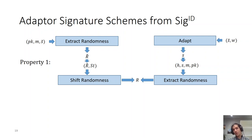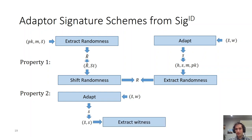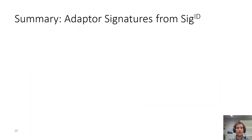This is, for example, necessary in order to prove pre-signature adaptability, where you have a valid pre-signature and you want to make sure that if you adapt it, you would get a valid full signature. The second property is simpler: it states that if you adapt a pre-signature and then extract the witness from the resulting signature and pre-signature pair, you would get the same witness that was used originally to adapt. This is of course needed for proving extractability. At this point, I will not go into more details regarding our single-party transformation of SIGID to adapter signatures, and I would now summarize our contribution with respect to single-party adapter signatures.